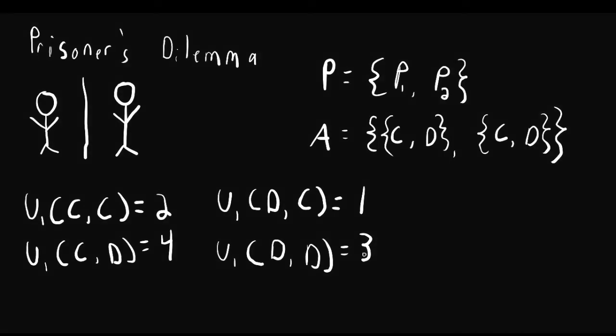Okay, so now this is the game. We have the players, the actions, and the payoffs. I want to mention also that Player 2's payoffs are going to be similar. So what I mean is that this is a symmetric game. So when they both confess, Player 2 also gets a payoff of 2.